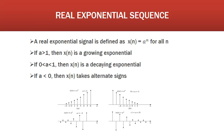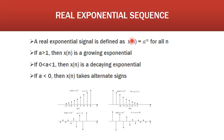Now we will discuss discrete time exponential sequences. There are two types: real exponential and complex exponential. A real exponential signal is defined as x(n) = aⁿ for all values of n. Depending on the value of a, we get different types of exponential signals. For case 1, when a > 1, the signal x(n) is a growing exponential. The figure shows a growing exponential signal — when a > 1 the signal grows exponentially.